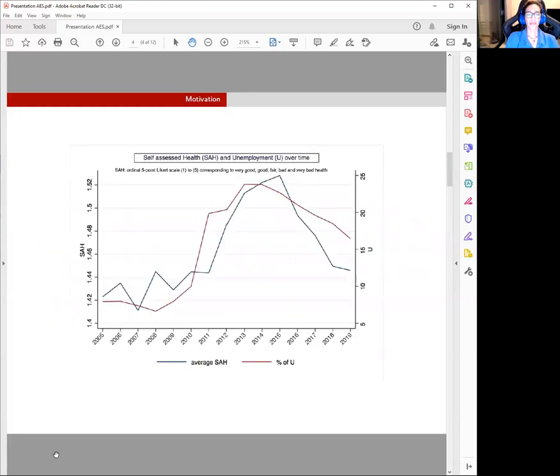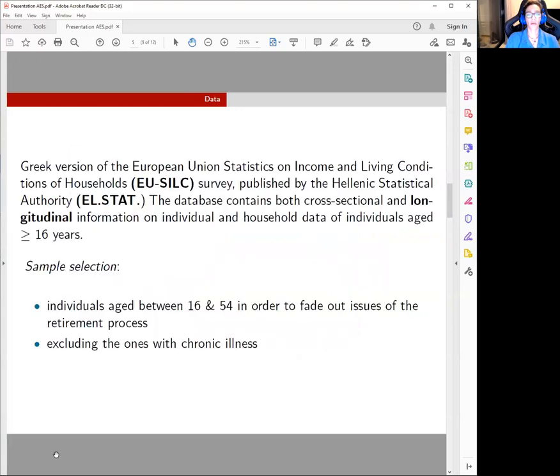Looking at this graph, we see that as unemployment increases, worsening health increases as well for the case of Greece, which serves as a motivation for revealing the exact mechanism of this relationship, especially during the years of economic downturn.